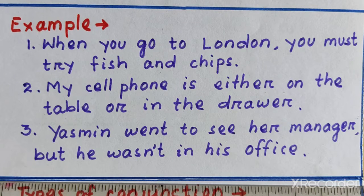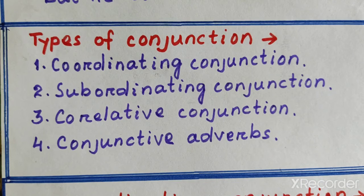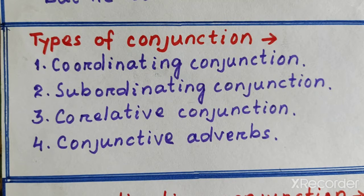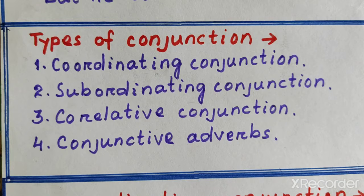So you see here that a conjunction can connect any two parts of a sentence. Conjunctions come in four major types: coordinating conjunction, subordinating conjunction, correlative conjunction, and conjunctive adverb.